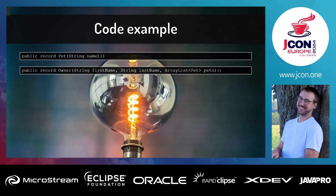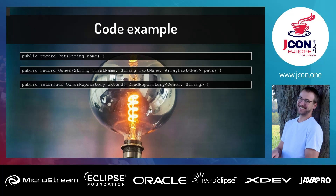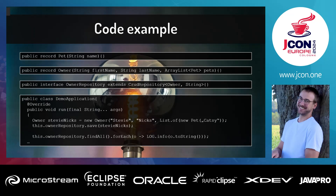When we start coding, in this example we create one Pet and one Owner, which are both very simple records. We use a CrudRepository — different from the ListCrudRepository — so you can only save single owners, not a whole list. In the demo application we create a new owner called 'Stevenix', save them into our owner repository, and when we call findAll we find one owner called Stevenix. Pretty easy.